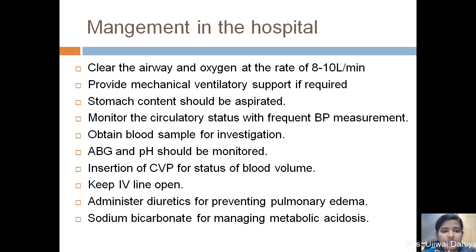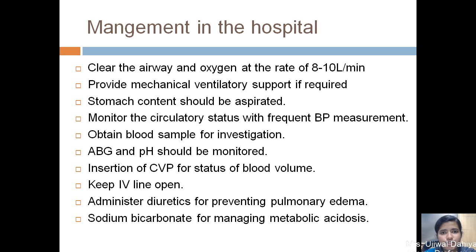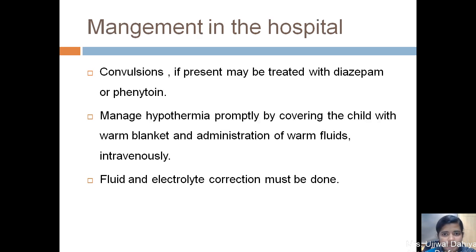For hospital management, immediately clear the airway and administer oxygen at 8 to 10 liters per minute. If required, provide mechanical ventilatory support. Aspirate stomach contents and monitor circulatory status including BP and central venous pressure for hemodynamic status. Monitor ABG and pH and keep IV line open. Administer diuretics to prevent pulmonary edema, sodium bicarbonate to treat metabolic acidosis, and if there are convulsions, administer phenobarbitone, diazepam, or phenytoin. For management of hypothermia, remove wet clothes and cover with a blanket, and correct fluid and electrolyte imbalances.